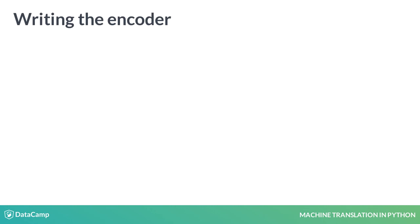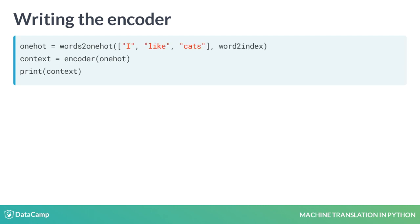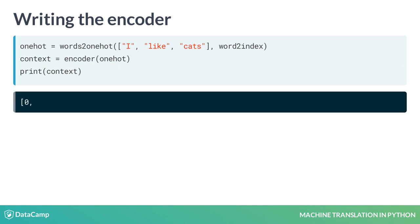To obtain the word IDs from the one-hot vectors, you can use the np.argmax function. np.argmax computes the index of the maximum element along a given axis. Since one-hot vectors are laid out along axis 1, you can use axis equals 1. After defining the two functions, you can encode a given sentence by calling the words-to-one-hot function with a list of strings and word-to-index as arguments. The context vector contains the corresponding word IDs of the words.